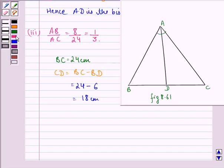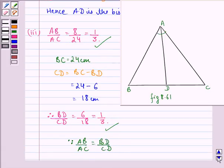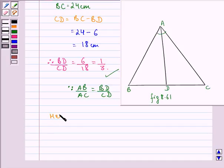Now we can find BD/CD. Therefore BD/CD is equal to 6/18. We divide numerator and denominator by 6 and get 1/3. So AB/AC is equal to BD/CD, that is 1/3 = 1/3. Since AB/AC is equal to BD/CD, hence we say that AD is the bisector of angle A. This is our answer to the third part.